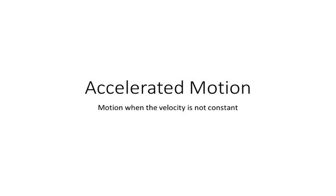Hey there, everybody. In this video, we're going to learn how to describe accelerated motion. Accelerated motion refers to motion when the velocity of the object is not constant. And so we have to learn a few new rules and descriptors when we get to motion without constant velocity.